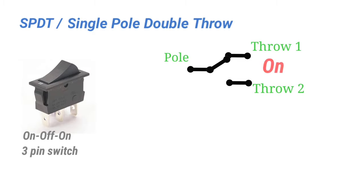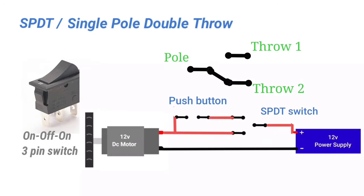SPDT has three positions: on, off, on, and it also has three pins. The middle one is the pole and the other two are throw one and throw two. With the help of this, we can perform two different operations with a single switch.